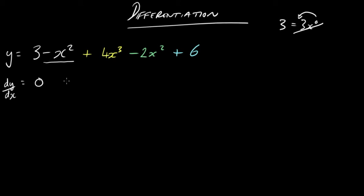So you bring the 2 down in front as usual. So it's going to be basically minus 2 lots of x to the power of 1, or minus 2x. Then we've got a plus sign next. So it's plus 3 lots of 4x to the 3 minus 1, or 2.